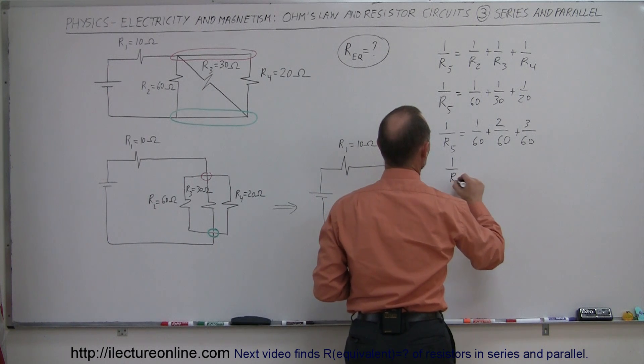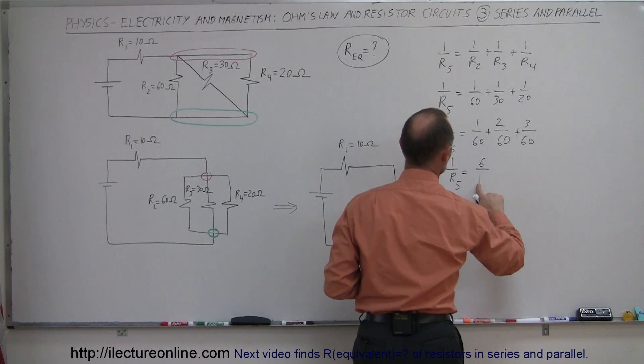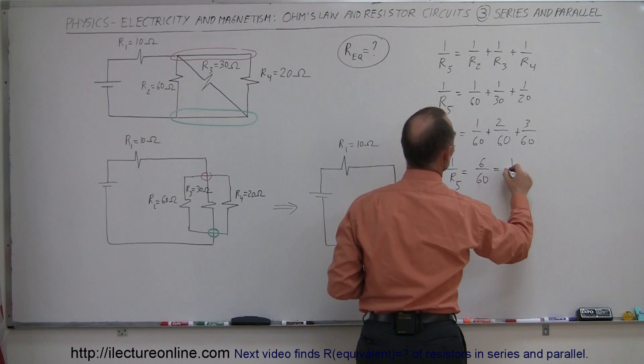So 1 over R5 is equal to 1 plus 2 plus 3, which is 6 over 60. I wrote 160. And so that would be 1 over 10.